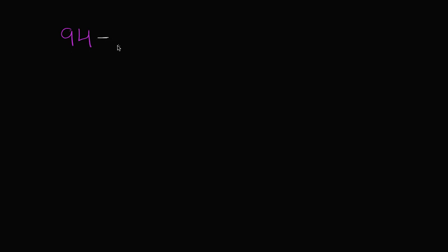94 minus blank, 94 minus blank is equal to 57. Let me write this in that color, is equal to 57. So this is saying, what do I have to subtract from 94 to get to 57?